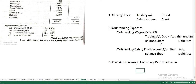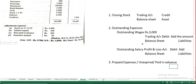One key difference: for outstanding expenses you add the amount; for prepaid expenses you subtract. Students often get confused here — outstanding means add, prepaid means minus (subtract). Most probably insurance and similar items come under the profit and loss account.